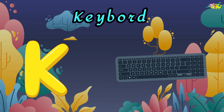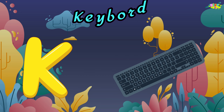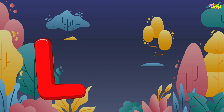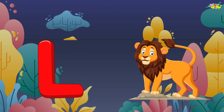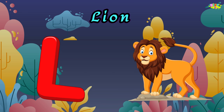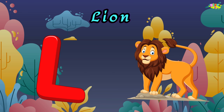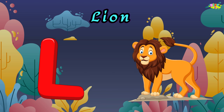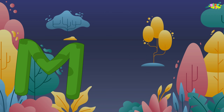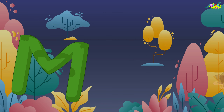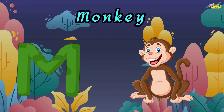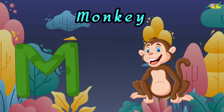K is for keyboard. K, K, keyboard. K, K, keyboard. K, keyboard. L is for lion. H, H, lion. H, H, lion. L, lion.